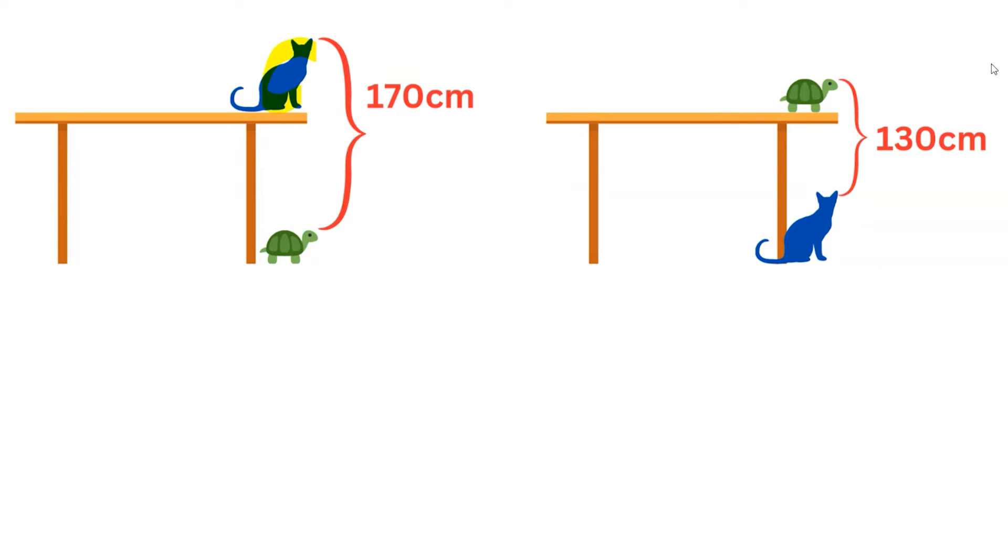In the first condition, the cat is on the table and the turtle is under the table. In the second condition, the turtle is on the table and the cat is under the table.